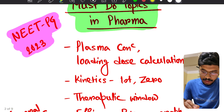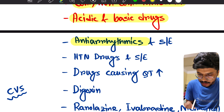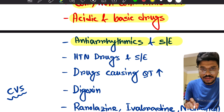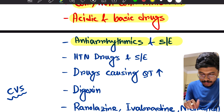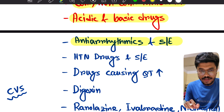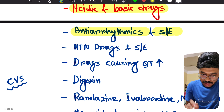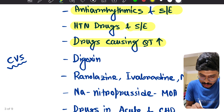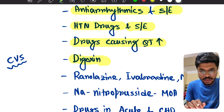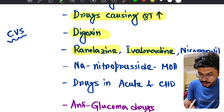From CVS: antiarrhythmics and their side effects — especially amiodarone, its mechanism and side effects are all important. Antihypertensive drugs and their side effects, drugs causing QT prolongation, and digoxin — a very important drug.